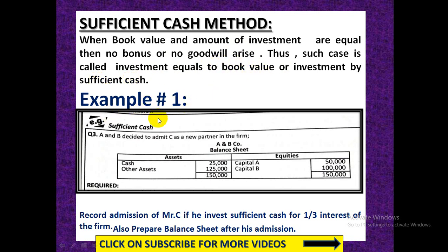Have a look at the example. A and B are partners and they are admitting C as a new partner. This is their balance sheet — cash and other assets are given; capital of A is 50,000 and capital of B is 1 lakh. Now Mr. C is coming for one-third interest. The amount brought by him is not given — we will calculate it ourselves.